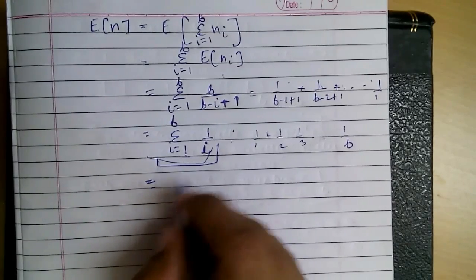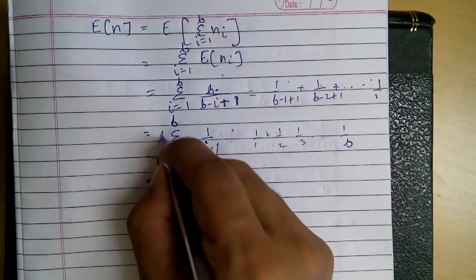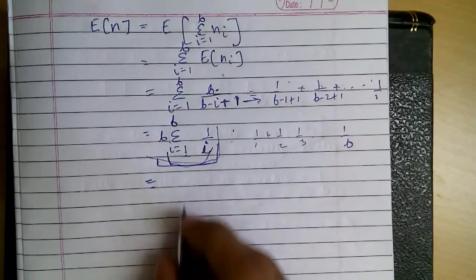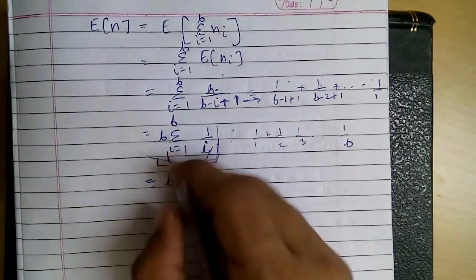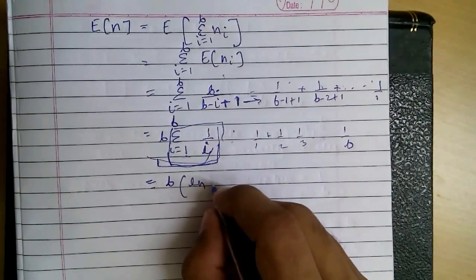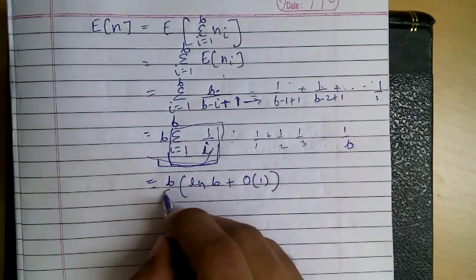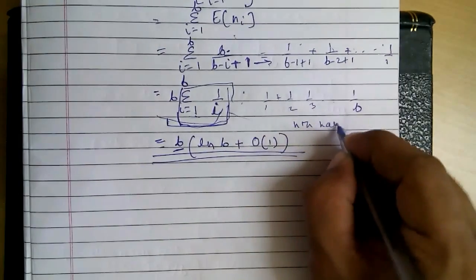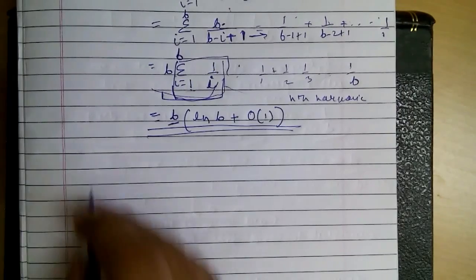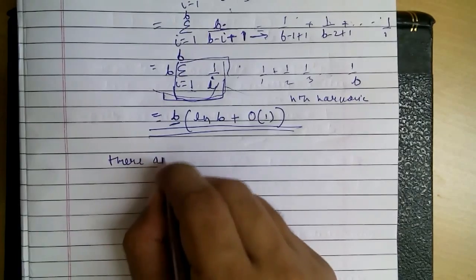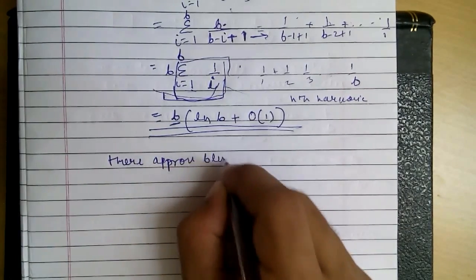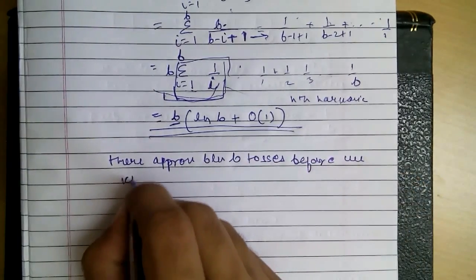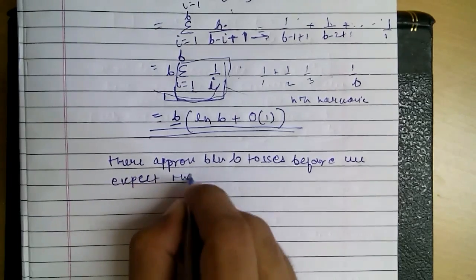And as we know, by the nth harmonic, we can solve that this expression will give B log of B plus O of 1. So this is our final expression by nth harmonic equation. So there are approximately B log B tosses before we expect that every bin has a ball.